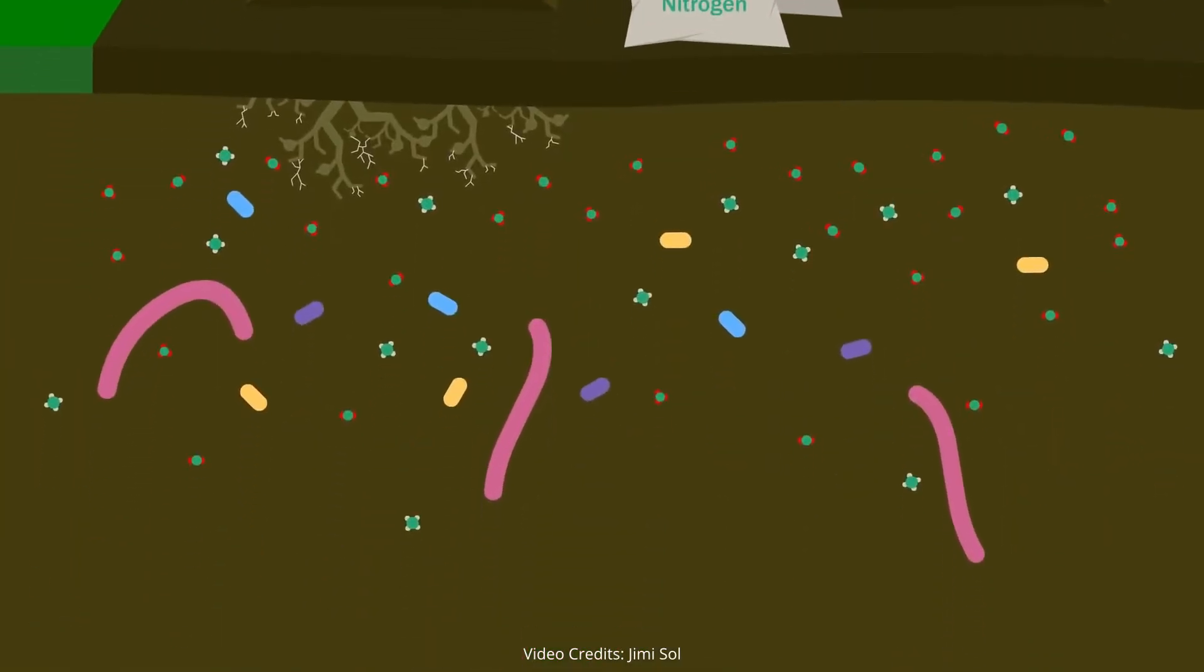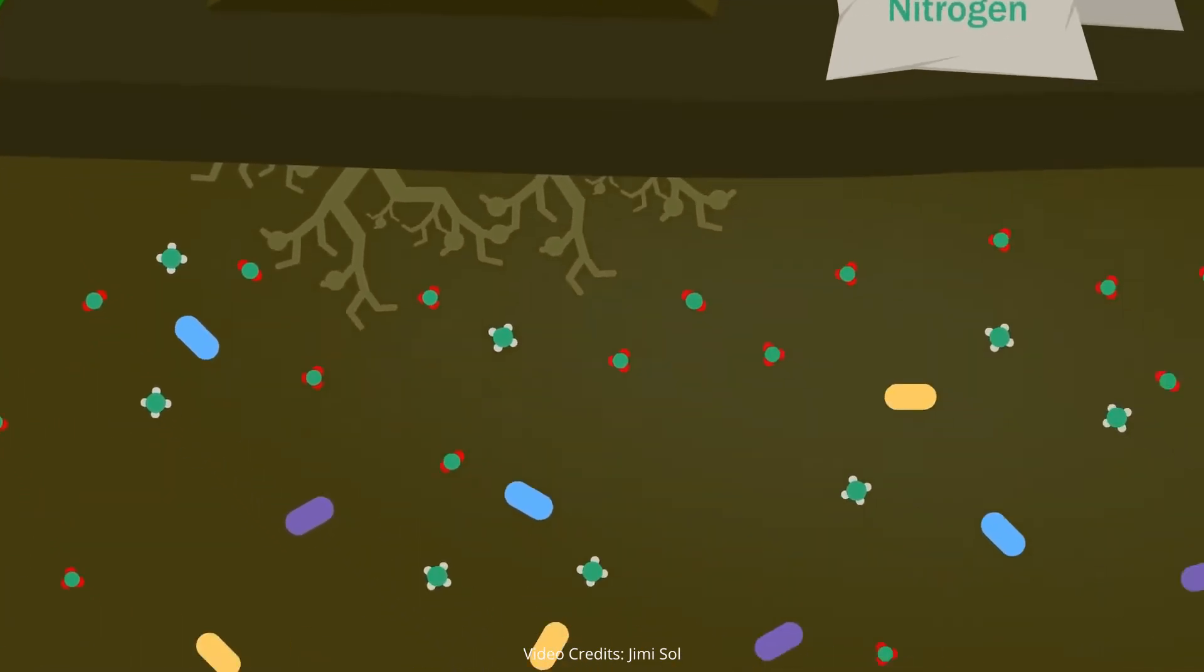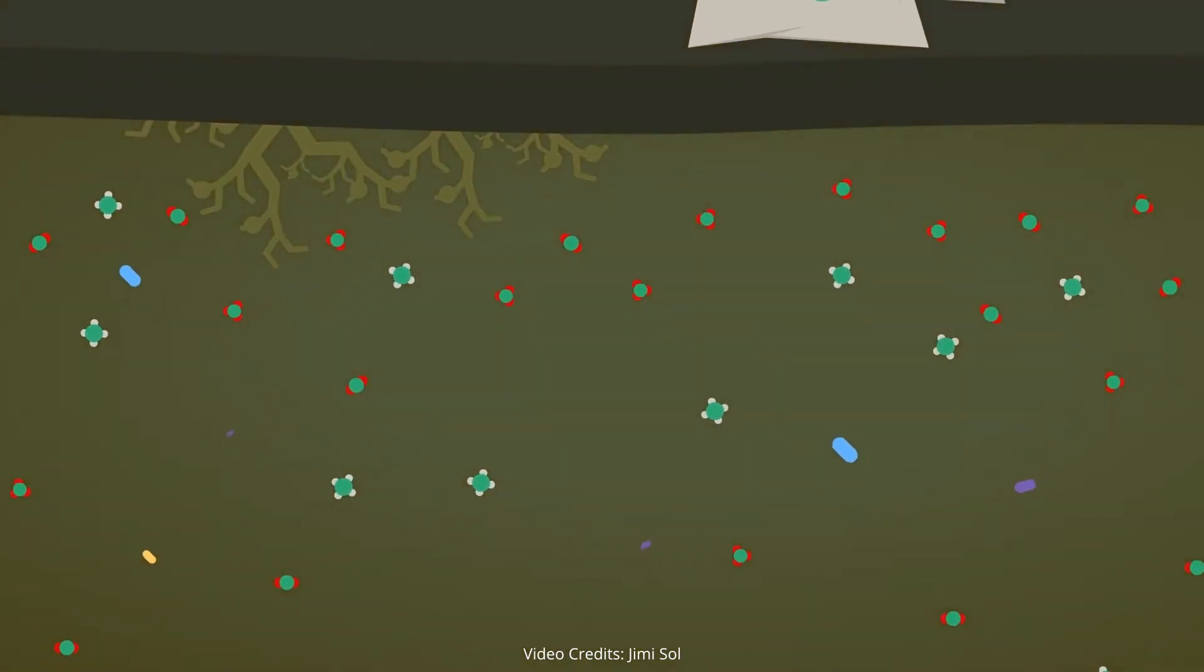Such quantities of pure nitrogen irritate earthworms, which end up dying or leaving. It disrupts the helpful fungus on plant roots and changes the soil pH, making it inhospitable to bacteria.